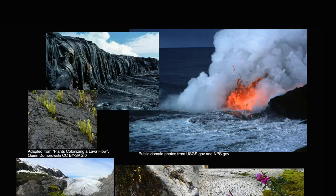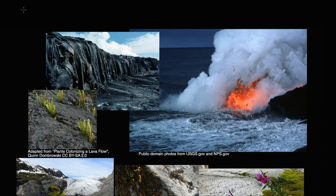When you look at a community that is in a given habitat, a natural question is to say, has that community always been that way? Has it always been there? Was there a time where maybe there was no life there? The communities do change over time, and there is some initial period where there might not be any life in that habitat, and then life slowly colonizes it, and the makeup of that community will change over time. This general idea is called ecological succession.